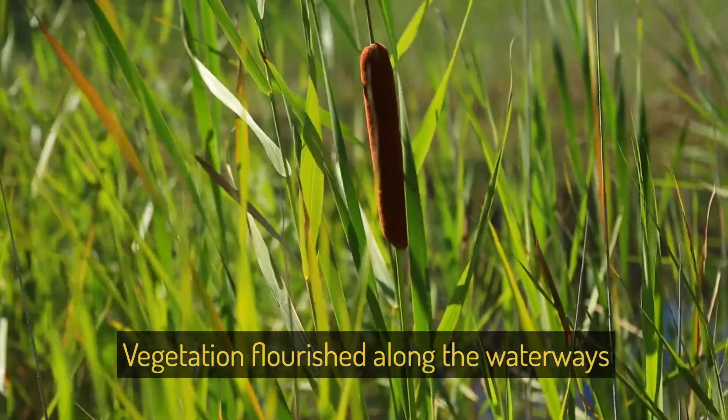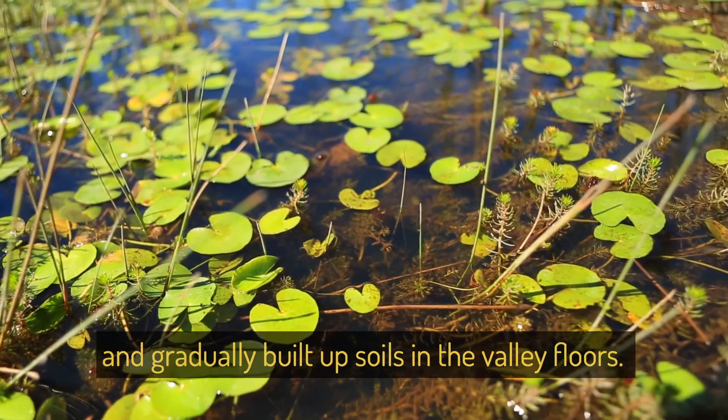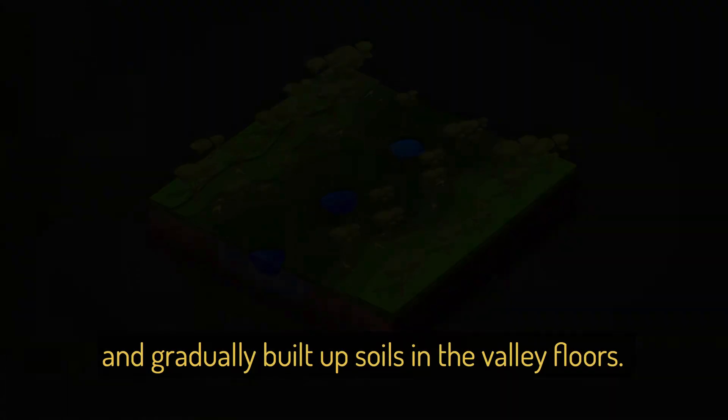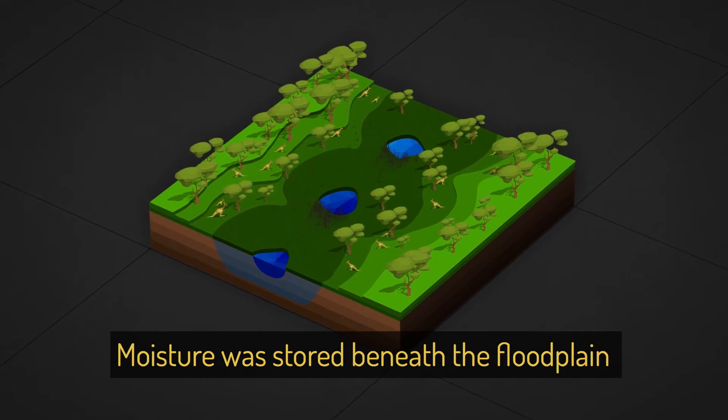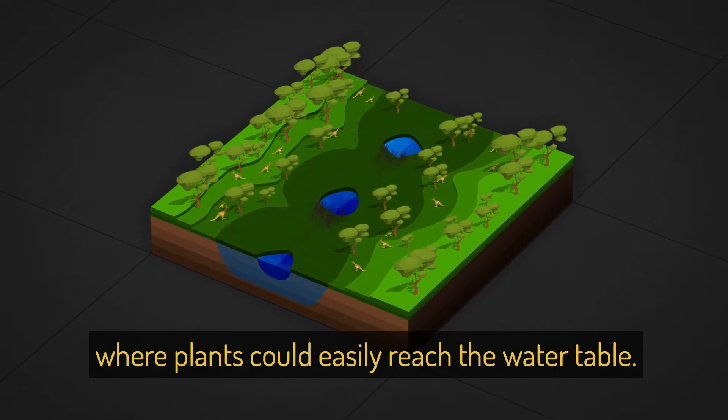Vegetation flourished along the waterways, which captured sediments and gradually built up soils in the valley floors. Moisture was stored within the floodplain, where plants could easily reach the water table.